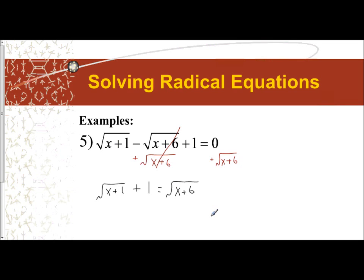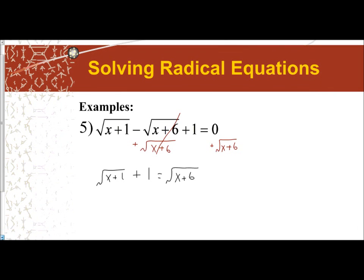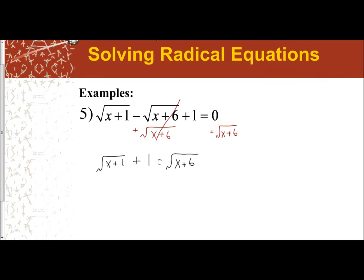Now that we have radicals on both sides, we are going to square both sides. Squaring the left side is going to be a little more complicated because there are two terms. Squaring the right side is going to be easy because there's only one term inside of a radical, and squaring the square root just cancels out. So the right side is simple — it's just what was in the radical, x plus six.